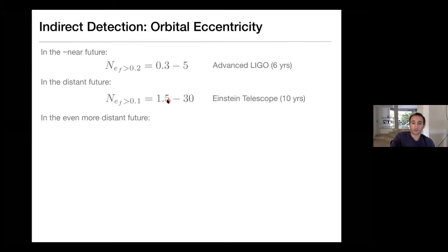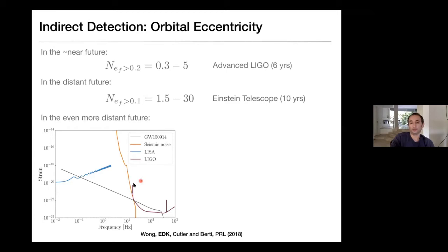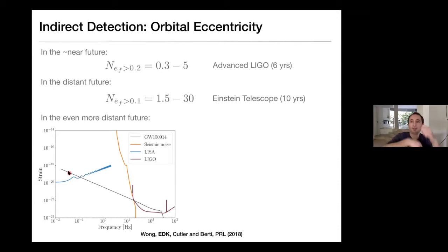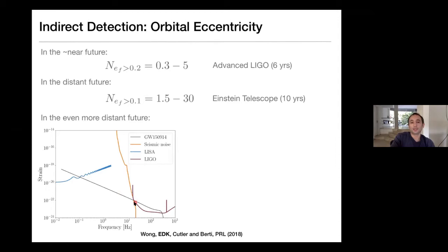Looking in the even more distant future, LISA in space: here we see noise spectra — LIGO's noise, which below around 10 to 20 Hz is dominated by seismic noise, and LISA's noise power spectrum. With LISA we could see the initial parts of the inspiral at frequencies of order 10^-2 to 10^-1 Hz, meaning we can see months of inspiral cycles. Since it's so early on in the inspiral, we have a higher chance to detect the eccentricity.